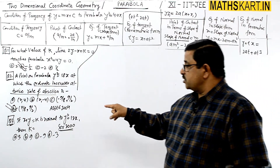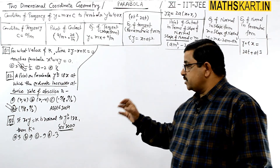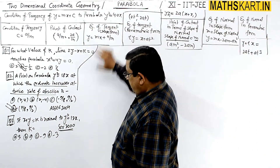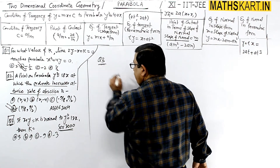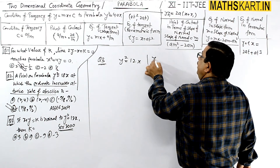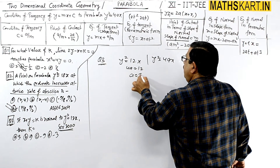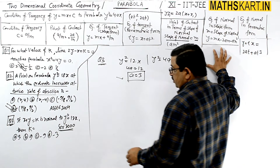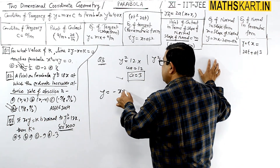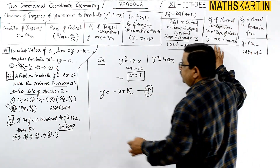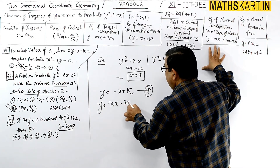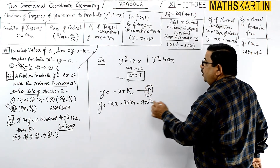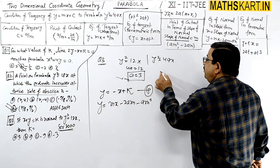Question 3 (Screening 2000): If x + y = k is a normal to the parabola y² = 12x, find k. The parabola is in standard form; comparing y² = 4ax with y² = 12x gives 4a = 12, so a = 3. Since the line is a normal, we write the normal equation: y = mx minus 2am minus am³. Rewriting x + y = k as y = -x + k, we compare: m = -1.